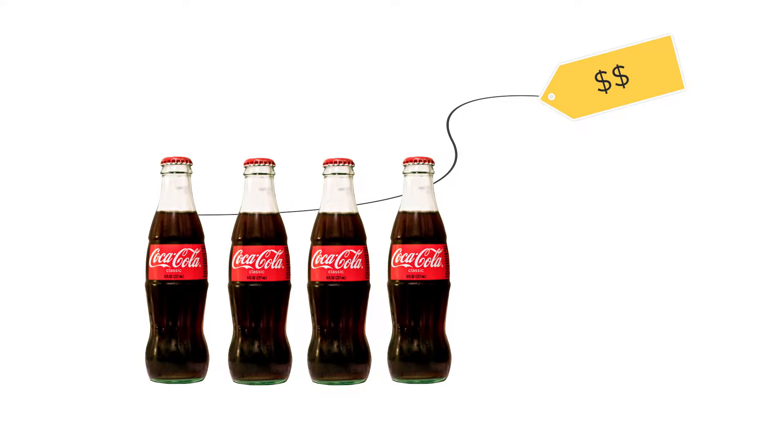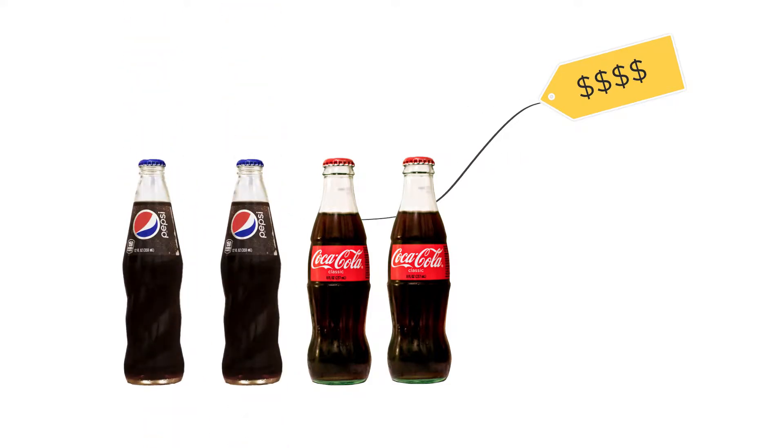So the price of Coke goes up. The substitution effect means you shift to other sodas. The income effect means that because the price went up, you feel effectively poorer. So you'll reassess what you can and can't afford and decide whether to buy more or less Coke.